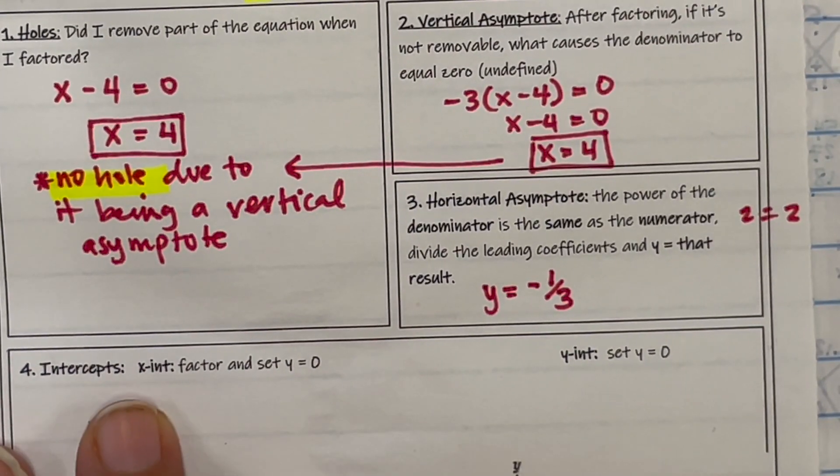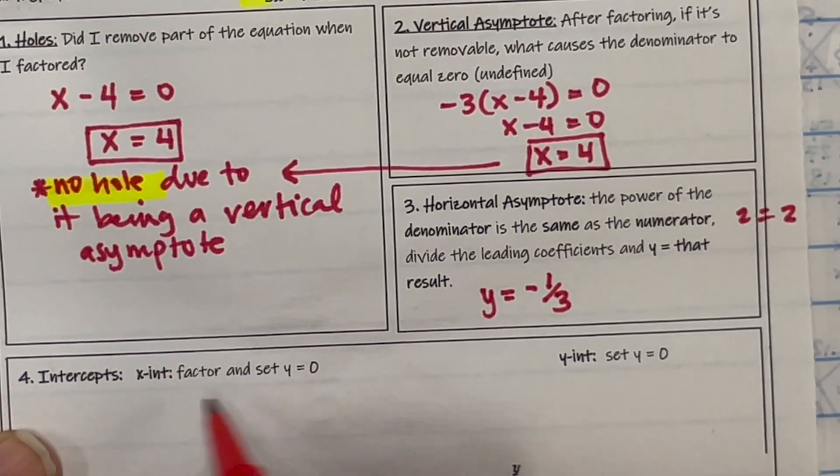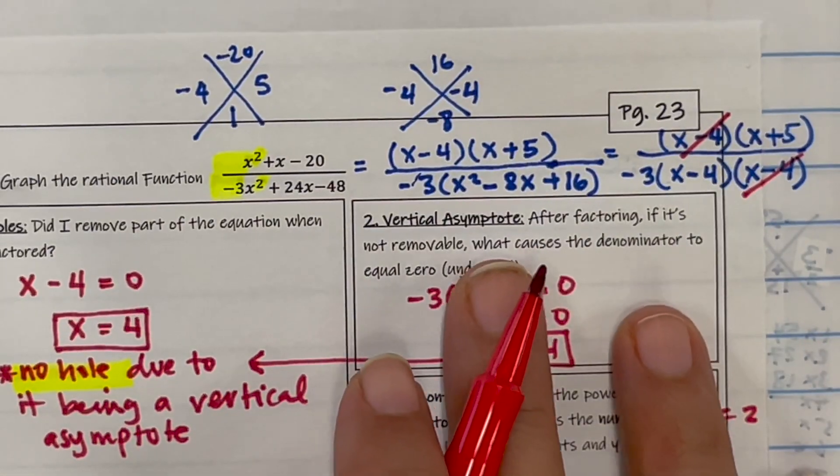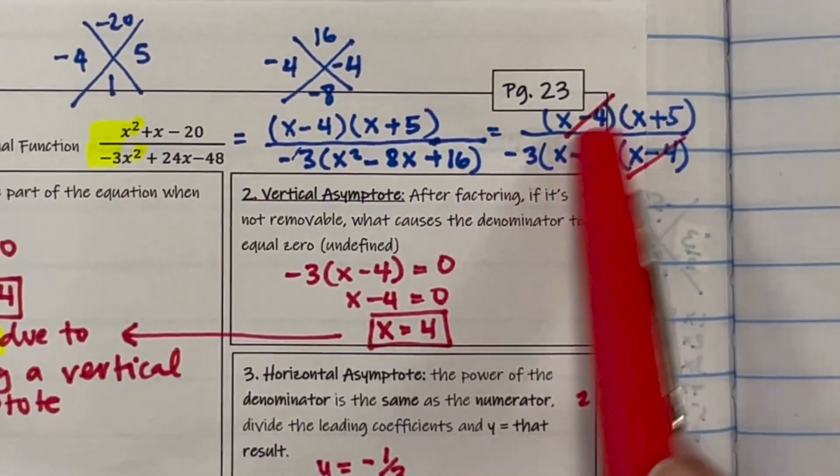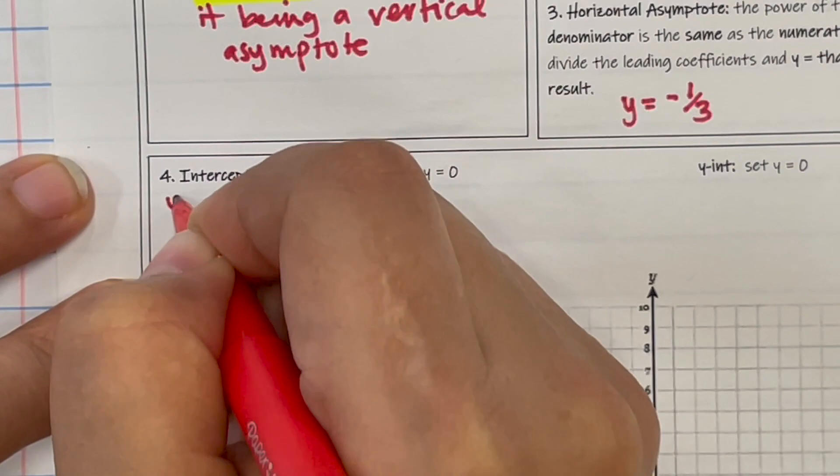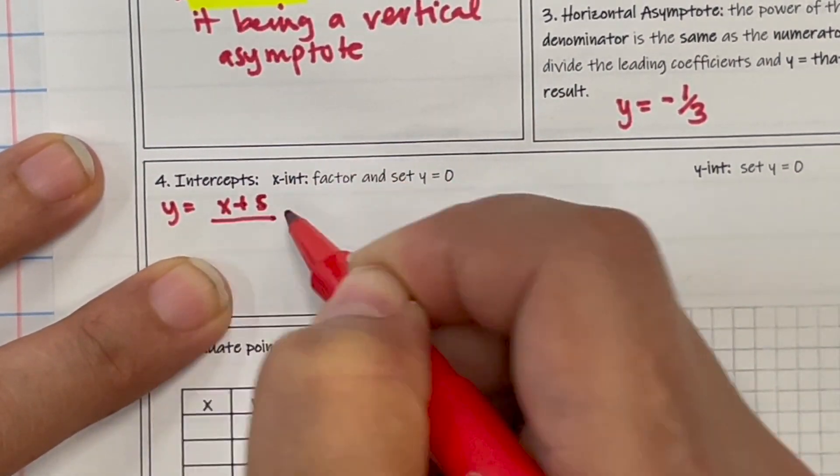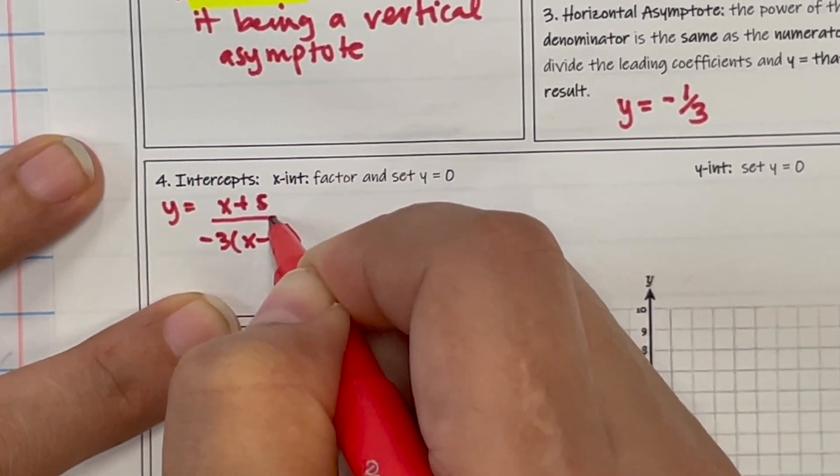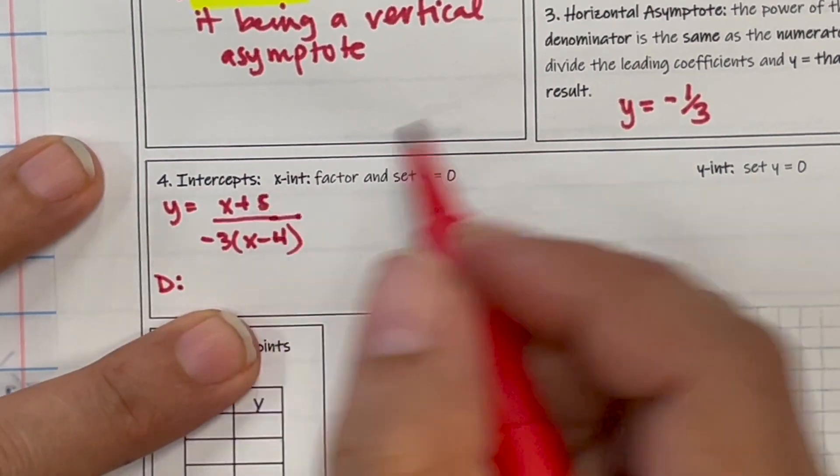So your intercepts, remember you factor, you set the numerator equal to 0 after establishing the domain. So that's what we need to go do. So we've factored, so we're going to write down our factored form. So y equals x plus 5, x minus 4 over negative 3, x minus 4, x minus 4.